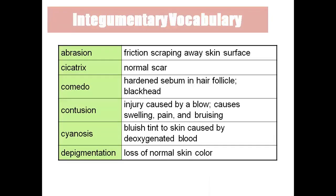In the vocabulary section: abrasion is a small injury where the epidermal layer peels off — for example, when we fall on sand or a hard surface. Cicatrix is the normal scar that forms after a wound. Comedo means blackheads — blackheads are hardened sebum usually seen on the nose and face area.